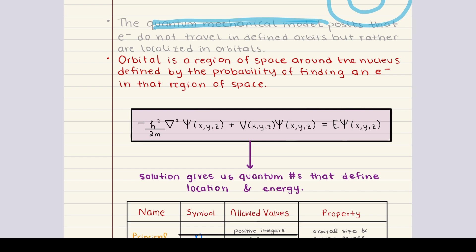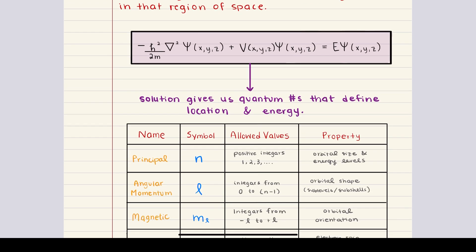These orbitals aren't random. They come directly from the Schrödinger equation. And while we won't go into the math behind it, what's important to know is that solving Schrödinger's equation gives us orbitals and the rules that govern them. These rules are summarized by four quantum numbers, and each quantum number provides specific information about an electron's location and behavior.